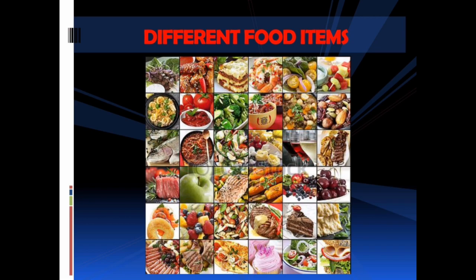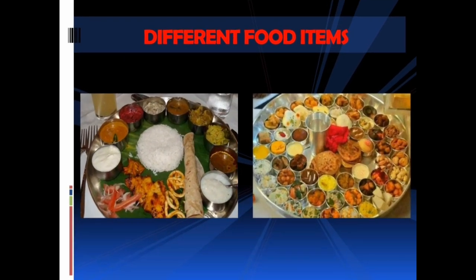How many of these items have you eaten? Have you counted how many food items are displayed in the picture? It is a six-by-six box, so a total of 36 food items are displayed. In this chapter we will discuss what is the importance of food components and how do they help us. Here is a complete traditional food spread.